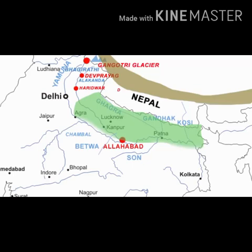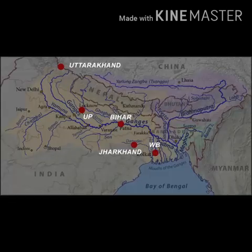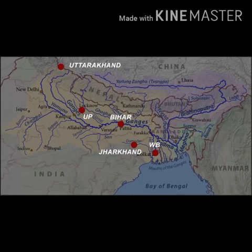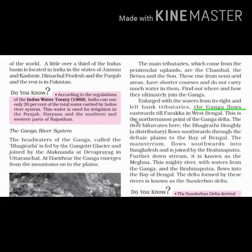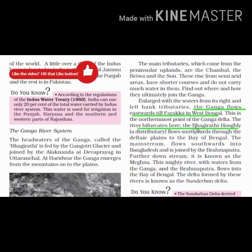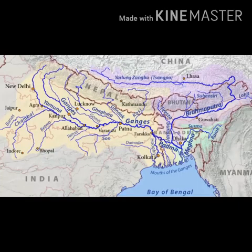So if in the exam they ask which are the peninsular rivers that join Ganga, they are Chambal, Son, and Betwa. Always remember, the river Ganga passes through five states: Uttarakhand, UP, Bihar, Jharkhand, and West Bengal. These five states form the majority of the northern plains. The Ganga flows eastwards till Farakka in West Bengal. Here the river is divided — Hooghly being one tributary flows southwards through the deltaic plains into the Bay of Bengal, and the main river Ganga flows towards Bangladesh and joins the Brahmaputra, finally draining into the Bay of Bengal. This region is called the Sundarban Delta.